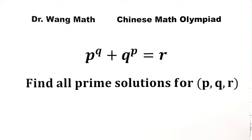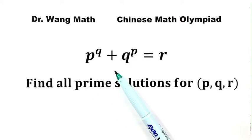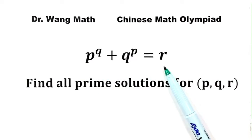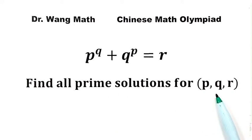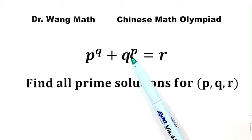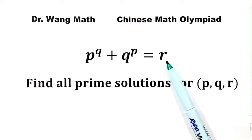In this video, we'll be solving a question from the Chinese Math Olympiad. Given the equation p^q + q^p = r, find all prime solutions for p, q, and r. Let's see how to solve one equation for three prime numbers.